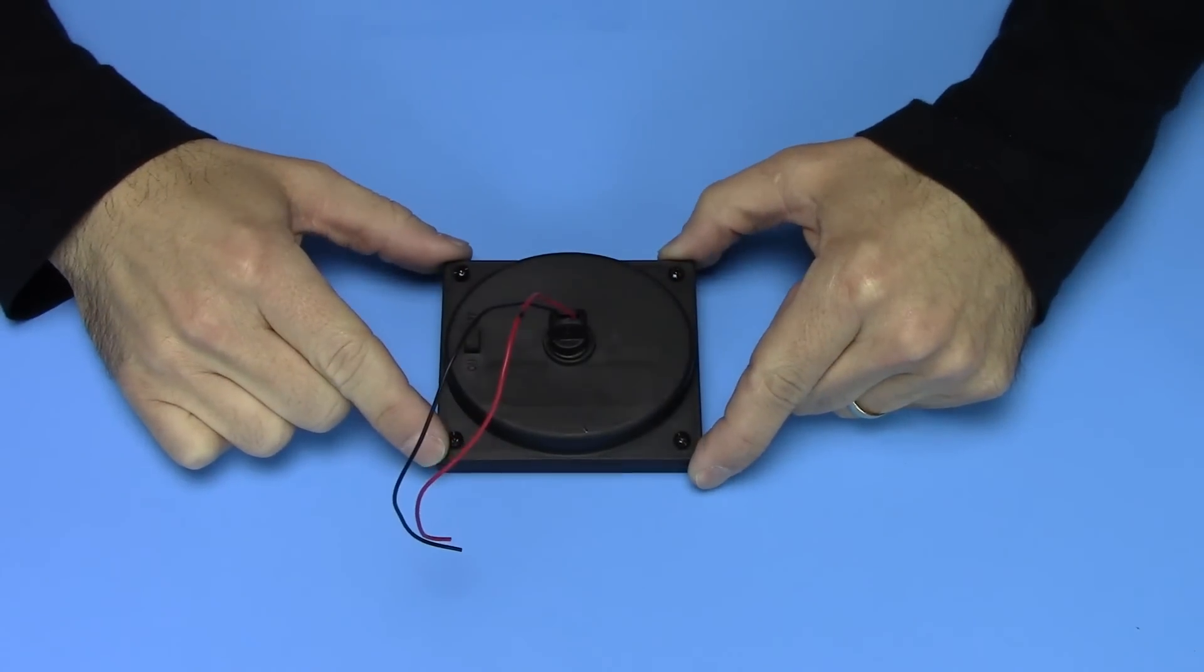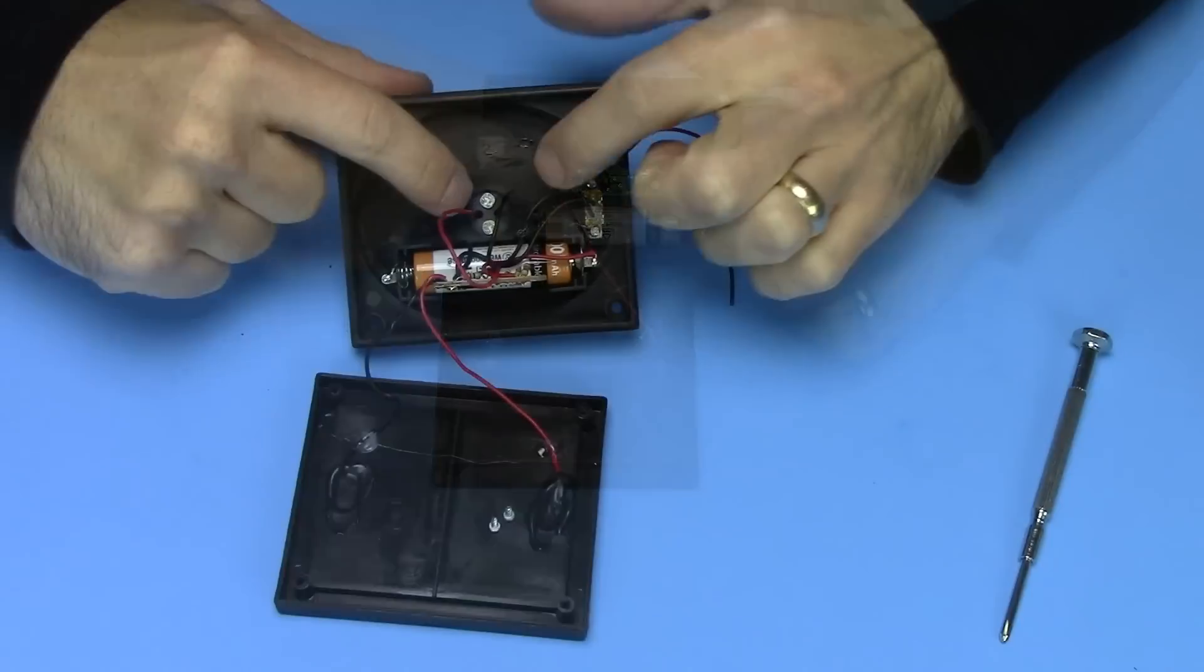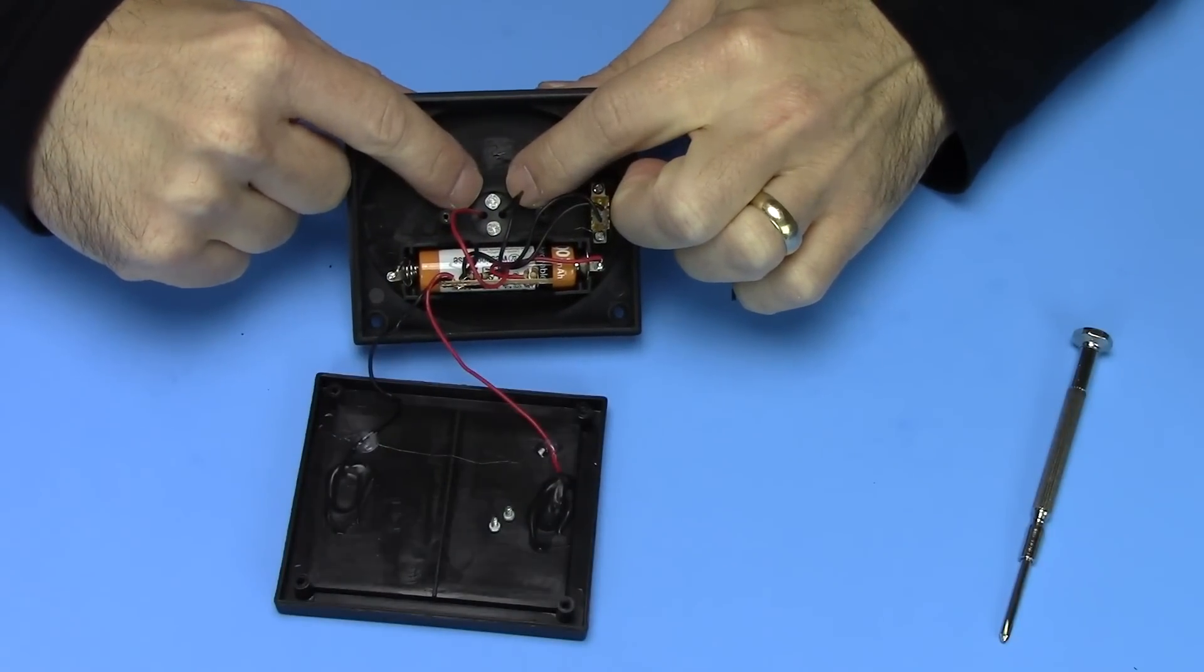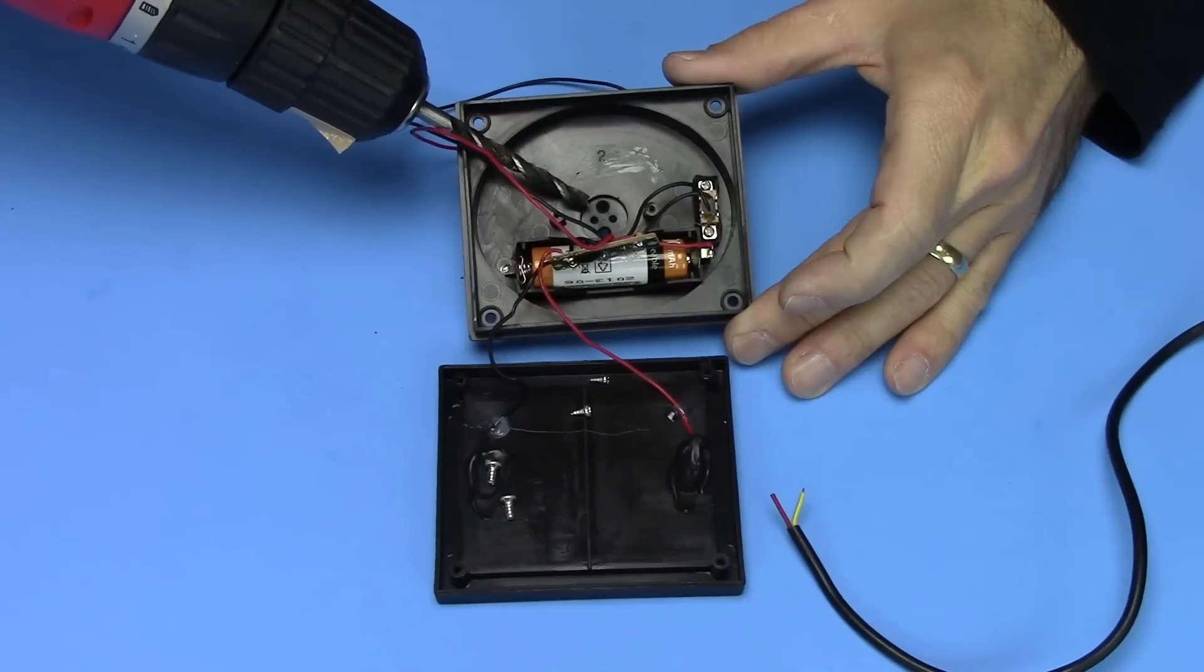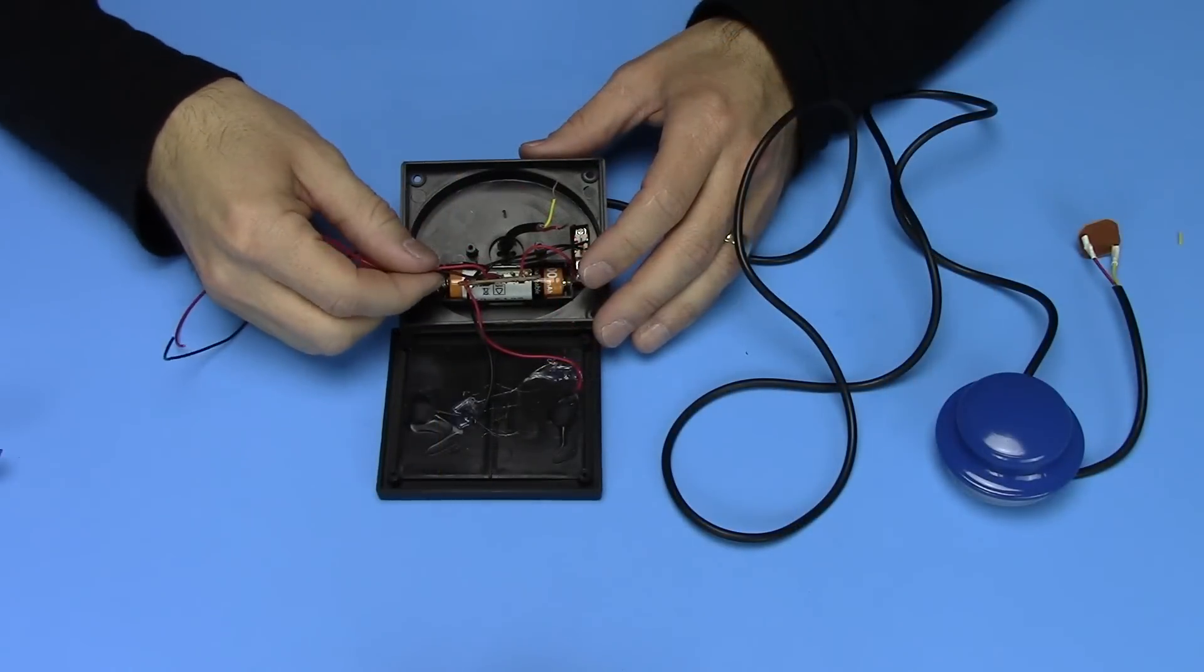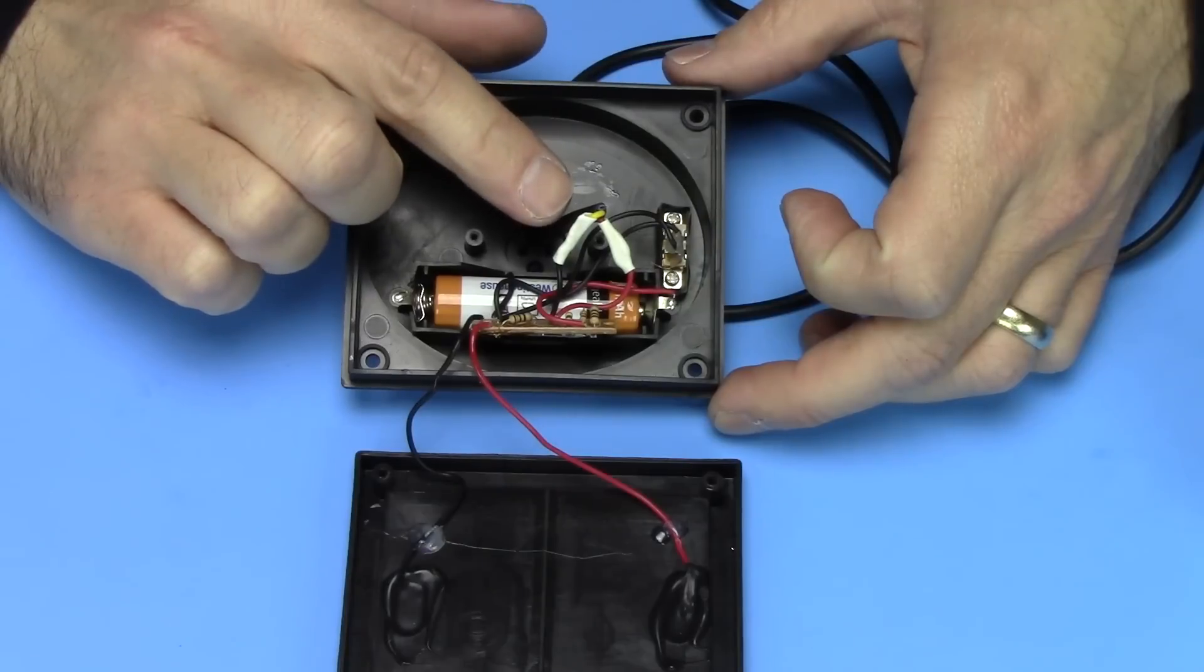Now go ahead and remove your four screws. Now go ahead and remove these two screws. Go ahead and remove these two screws from the bag. Go ahead and drill a hole into the bag large enough for your wire. Now go ahead and cut these wires and solder them to the incoming wires. And go ahead and close it all out.